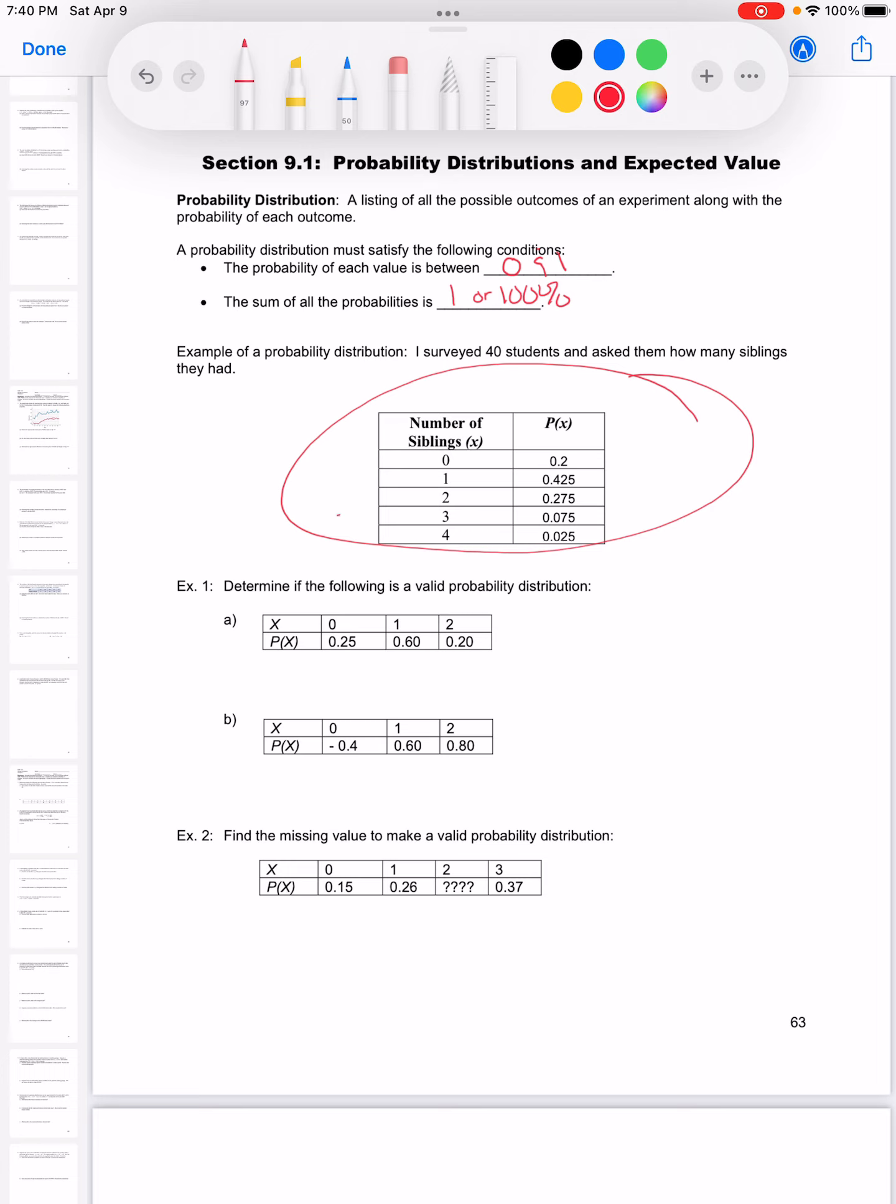So I would read across this one. The probability of having three siblings is 0.075. The probability of having one sibling is 0.425, or you could say 42.5%. They're just those percents written as decimals.